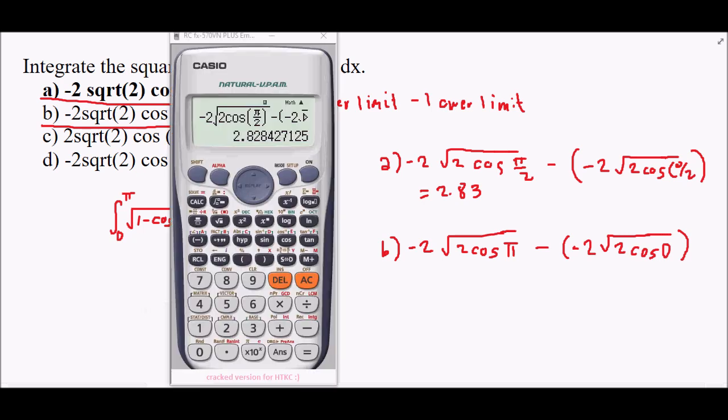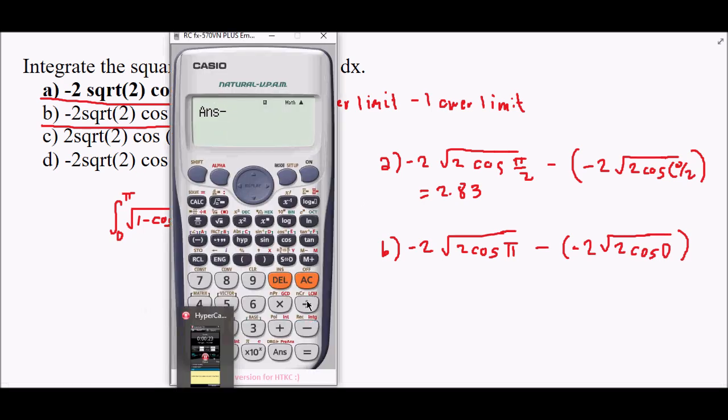Let's input that into our calculator: -2√2 cos(π) minus -2√2 cos(0), then we calculate.